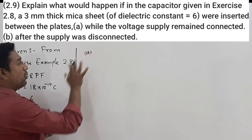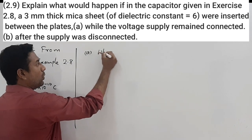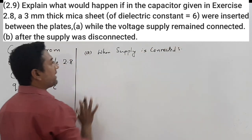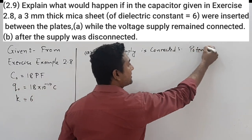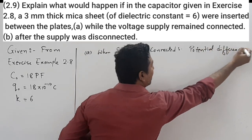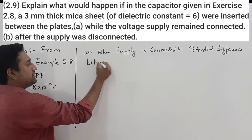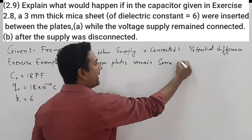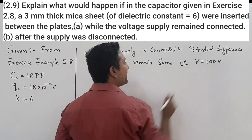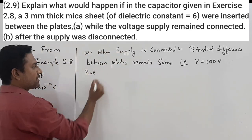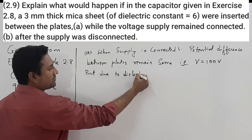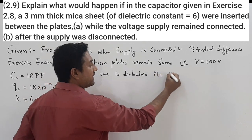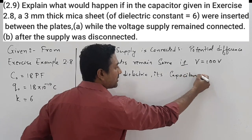When the supply is connected, the potential difference between the plates remains the same — that is, V is equal to 100 volts. But due to the dielectric (mica) which we are introducing between the plates, its capacitance increases.